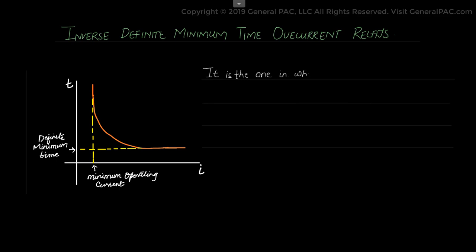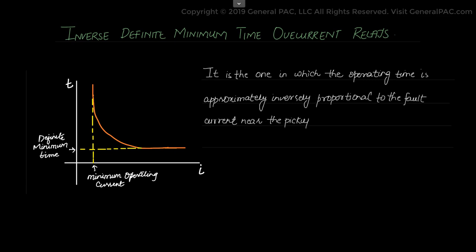The third category is called the inverse definite minimum time, the IDMT overcurrent relay, which is the one in which the operating time is approximately inversely proportional to the fault current near pickup value and then becomes constant above the pickup value of the relay.